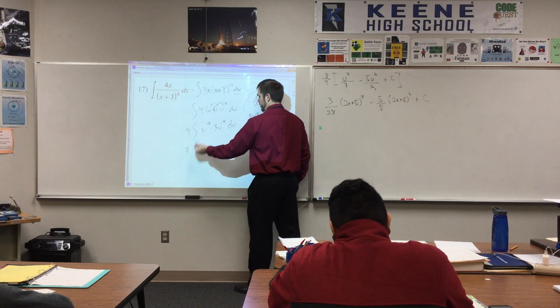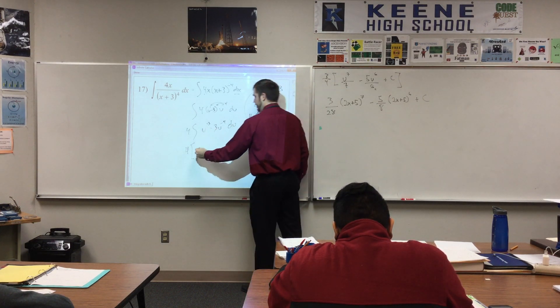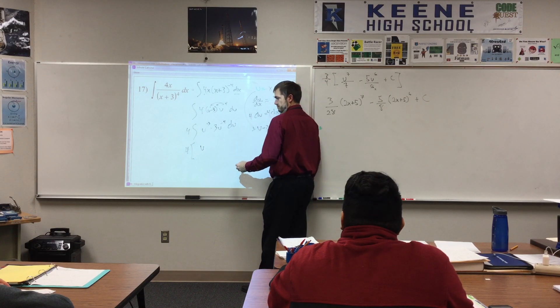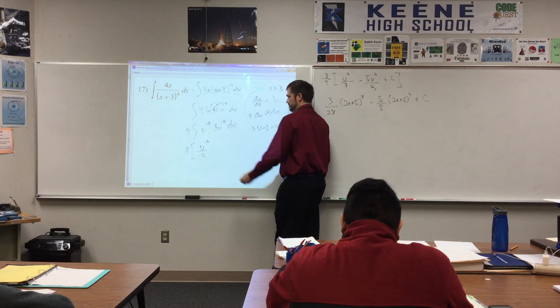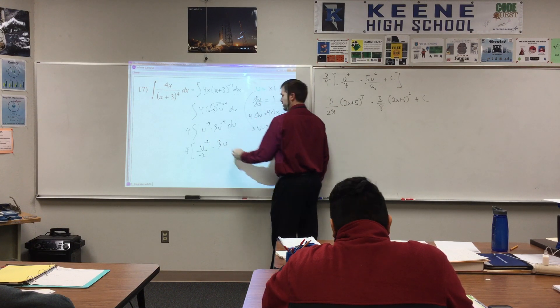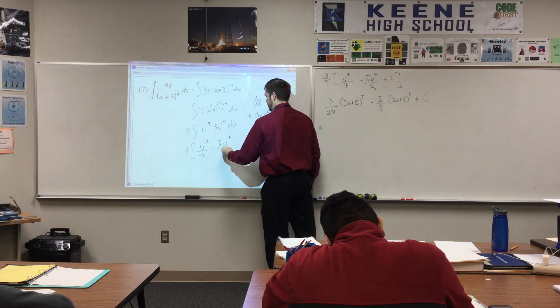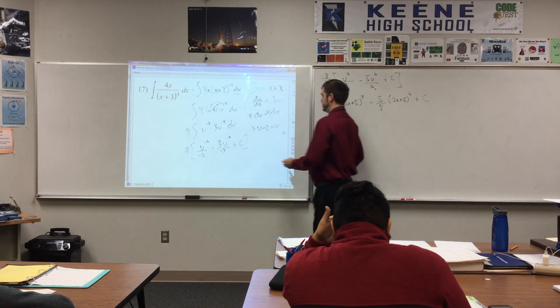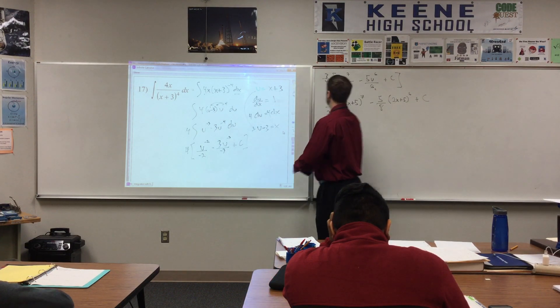This is going to be 4. I'll put the bracket here. Now we'll do the antiderivative of u to the negative 3. Antiderivative of u to the negative 3 is going to be u to the negative 2. Yep, u to the negative 2 over negative 2 minus 3u to the negative 3. To the negative 3 over negative 3 plus c. That's the antiderivative stuff.